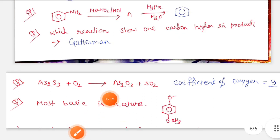Next, As2S3 + O2 → As2O3 + SO2. The coefficient of oxygen is 9 when we balance this equation. Most basic in nature - options are given but this is the correct answer. These are all the memory-based questions of KVS PGT chemistry paper. Thank you.